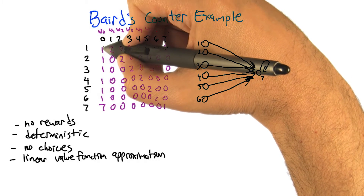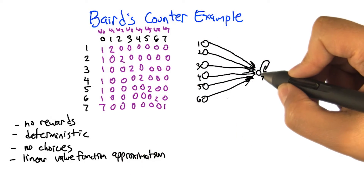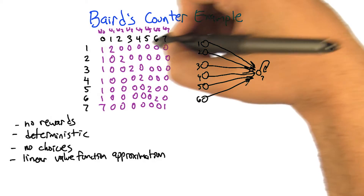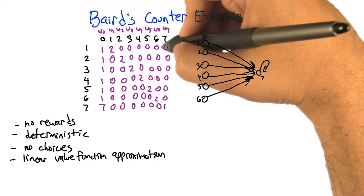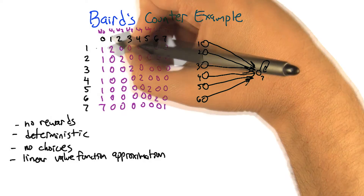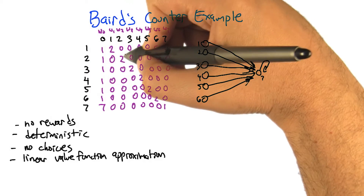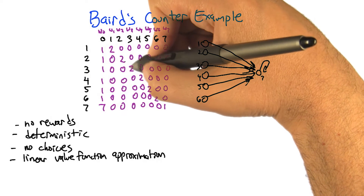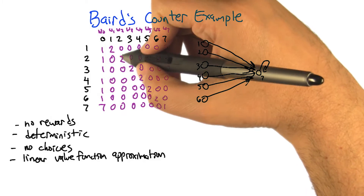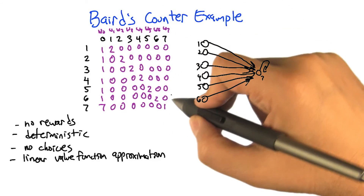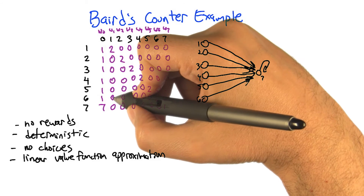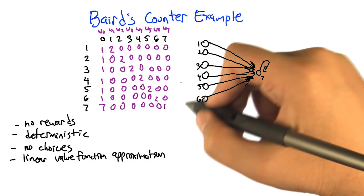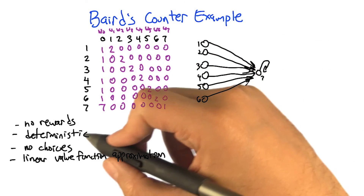Feature 0 is 1 for all these states and 7 for the repeating state. Interestingly, the other features are actually completely indicative of which state you're in. So state 1 has feature 1 being 2, state 2 has feature 2 being 2, state 3 has feature 3 being 2 — and that's the representation here. State 6 looks like 1 followed by 0s everywhere except for feature 6, which has a 2. So this feature representation is actually really close to being just a table.